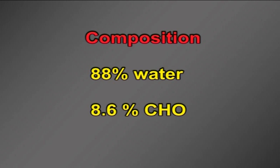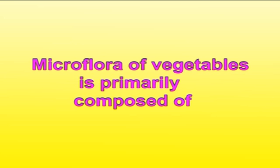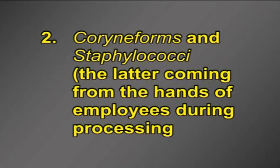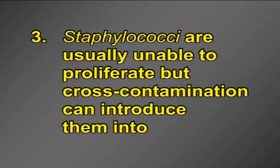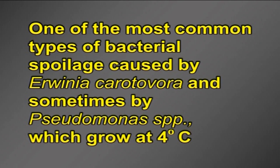Vegetables: composition is approximately 88% water and 8.6% sugars. The pH of most vegetables is around 6, within the growth range of many bacteria. The microflora of vegetables is primarily composed of gram-positive bacteria like lactic acid bacteria — e.g. Leuconostoc, Lactobacilli, Streptococci, Coryneforms and Staphylococci, the latter coming from the hands of employees during processing. Staphylococci are usually unable to proliferate, but cross-contamination can introduce them into other foods where growth conditions are more favorable. Soft rot is one of the most common types of bacterial spoilage, caused by Erwinia carotovora and sometimes by Pseudomonas species, which grow at 4 degrees Celsius.